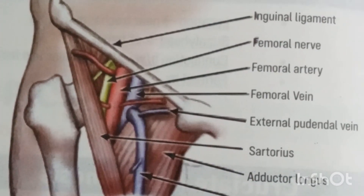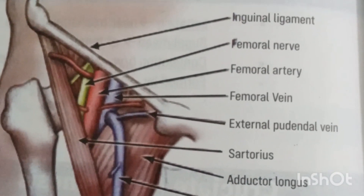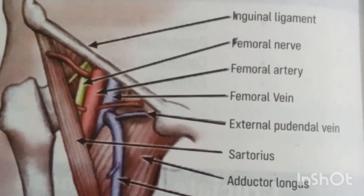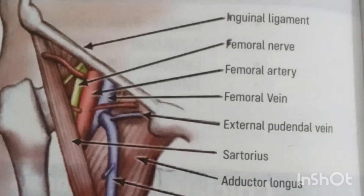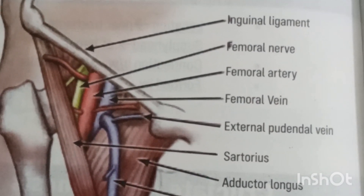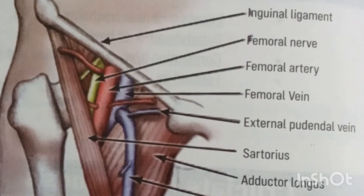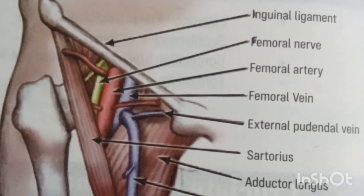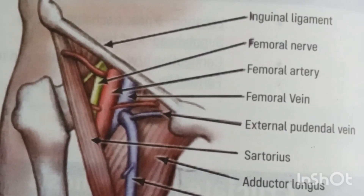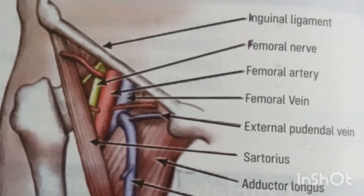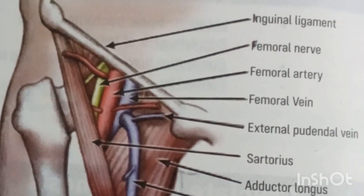Boundaries of the femoral triangle: laterally, it is bounded by the medial border of Sartorius; medially, by the medial border of adductor longus. The base is formed by the inguinal ligament, and the apex by the joining of the medial and lateral borders. The contents of the femoral triangle, from lateral to medial side, are: femoral nerve, femoral artery, and femoral vein.